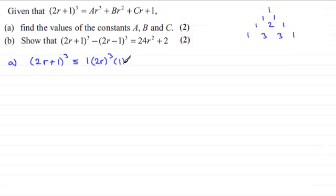Then plus this coefficient 3 multiplied by (2r)² and then 1¹—not that this really matters here, it's always going to be 1, but I'm just putting it in as a token.